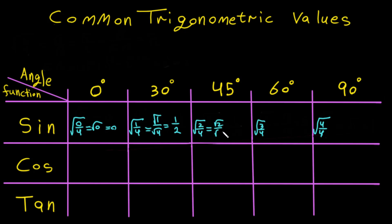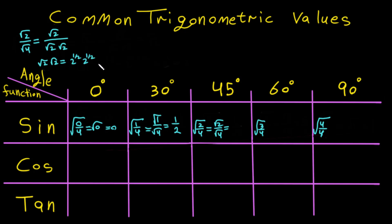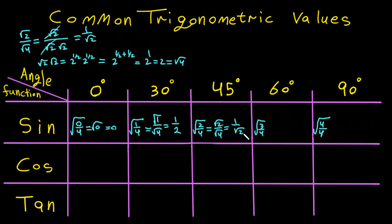For square root of 2 over square root of 4, we can write it as square root of 2 over 2. But it's better to express it as 1 over square root of 2. This is because square root of 2 multiplied by square root of 2 equals 2, which is also square root of 4. So the two cancel, giving 1 over square root of 2.